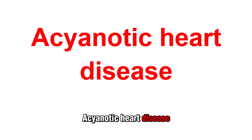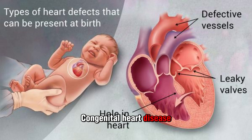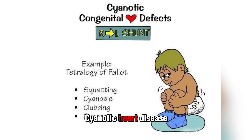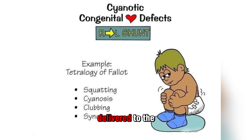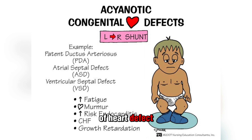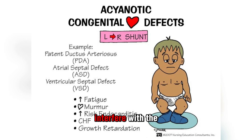Acyanotic Heart Disease. Congenital heart disease (CHD) is any abnormal heart structure present at birth. There are two types of CHD: Cyanotic congenital heart disease involves heart defects that reduce the amount of oxygen delivered to the rest of the body. Acyanotic congenital heart disease means blood contains enough oxygen, but it's pumped throughout the body abnormally. These defects don't interfere with the amount of oxygen or blood delivered to the rest of the body.